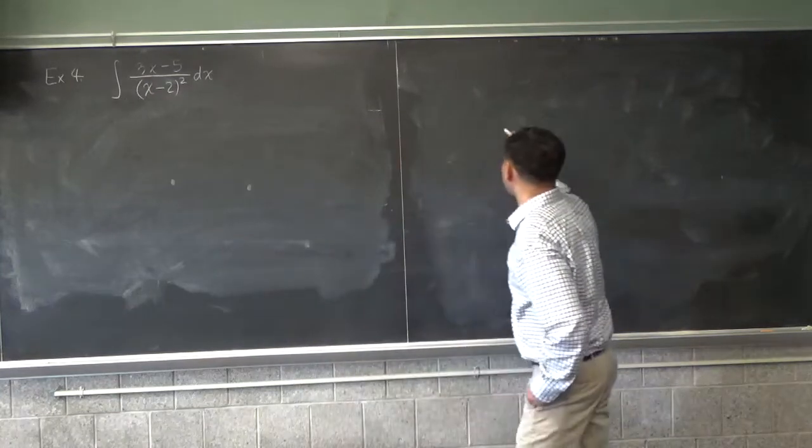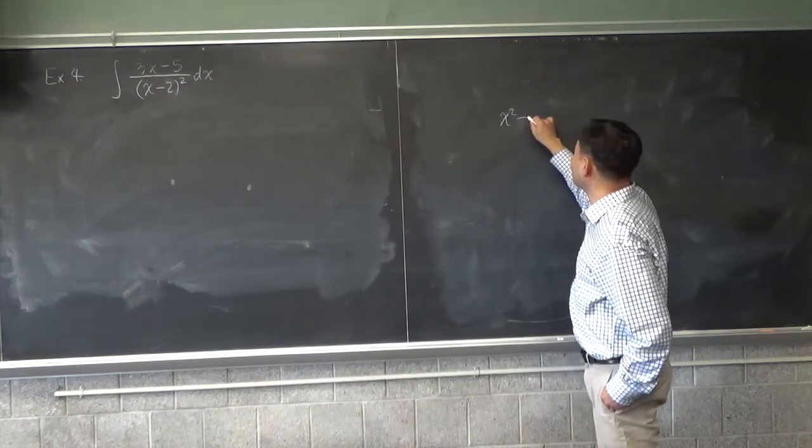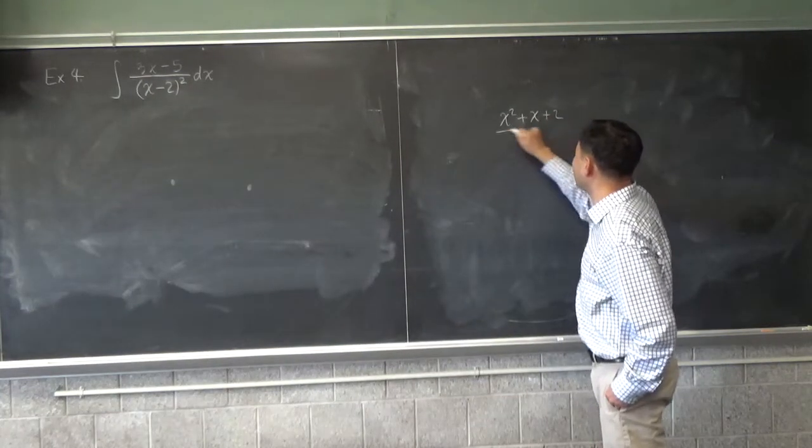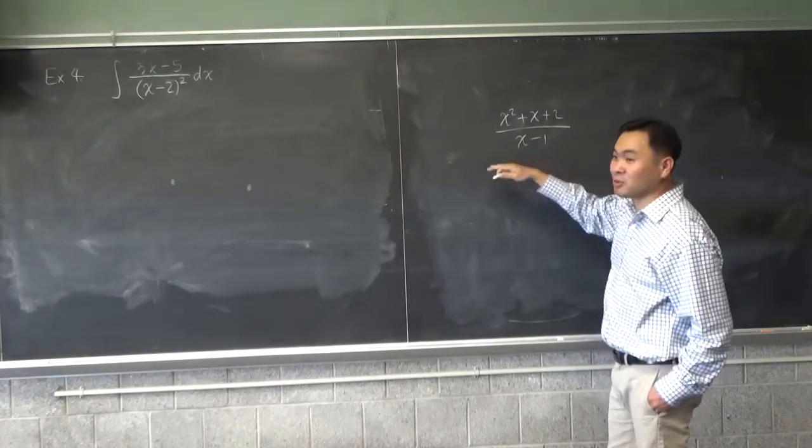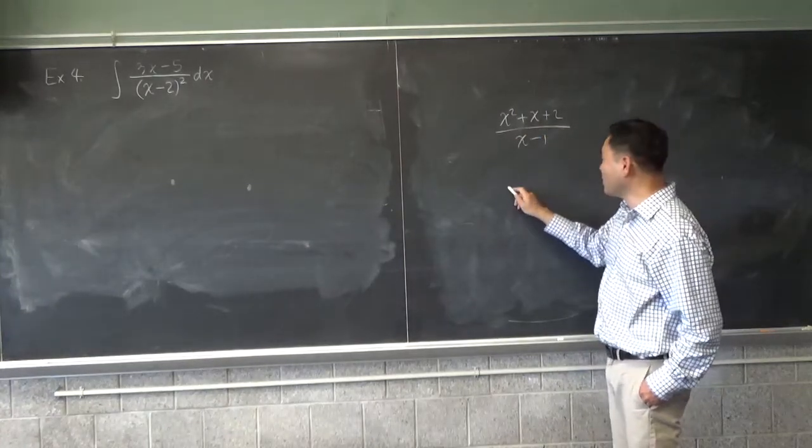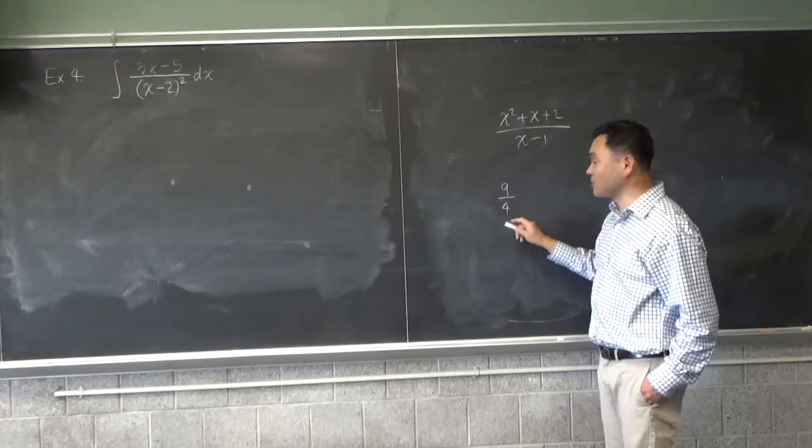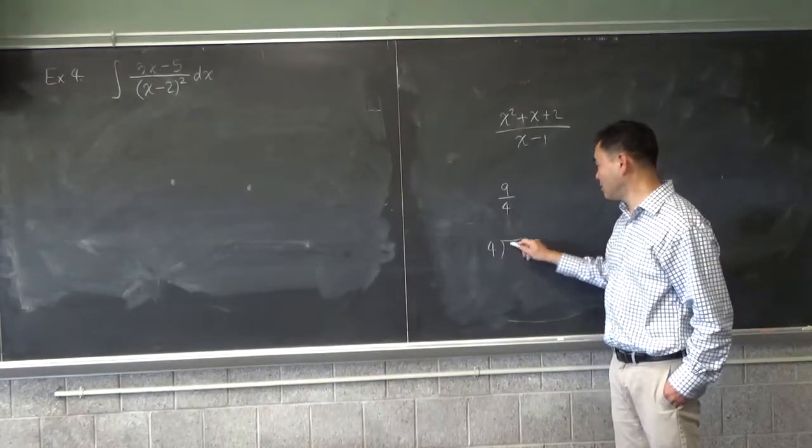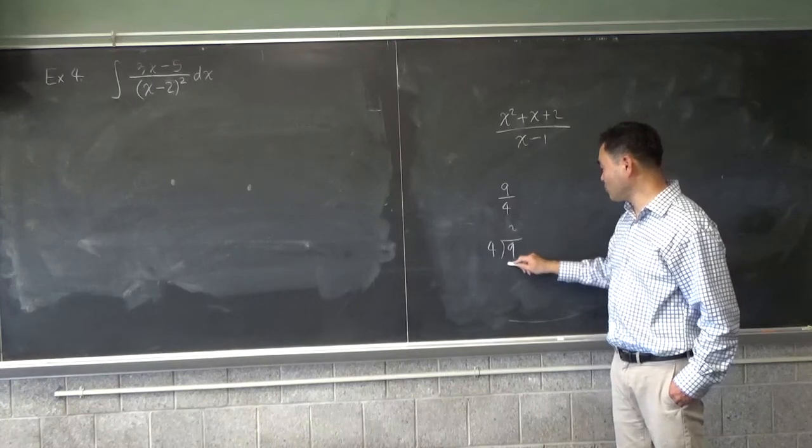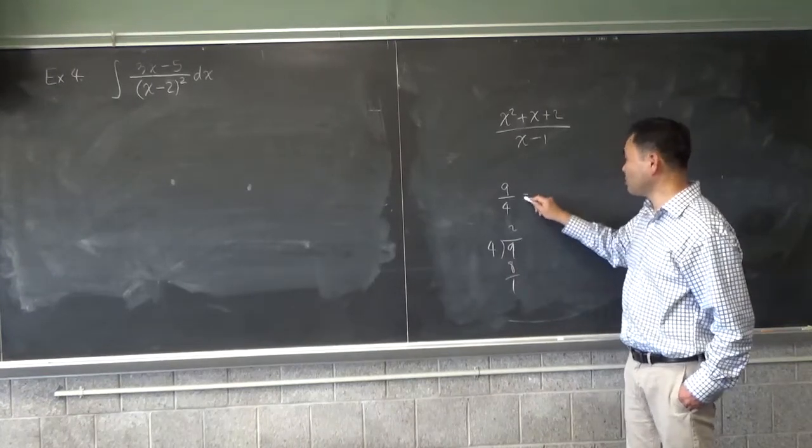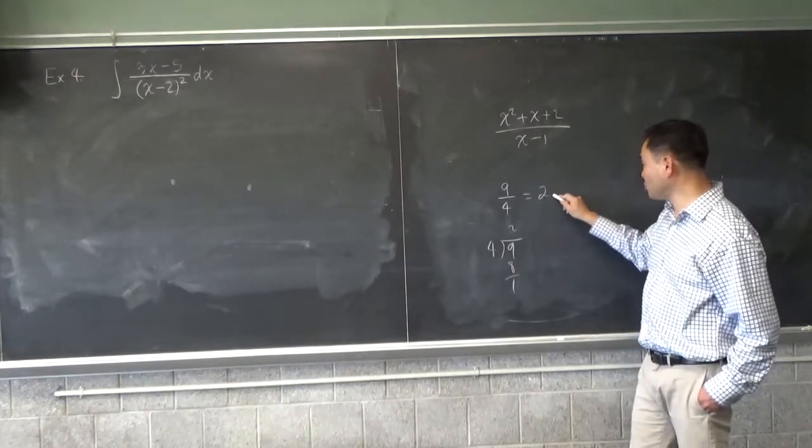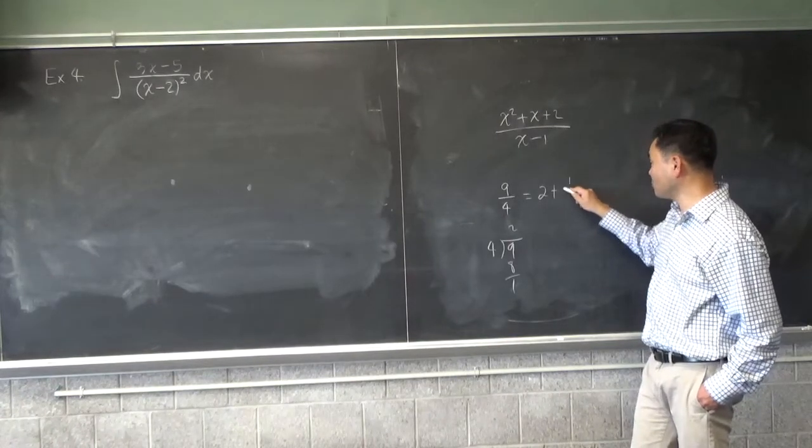So for example, if you have something like x squared plus x plus 2 over x minus 1, then you can do the long division. Just like when you have an improper fraction like 9/4 and you do the division, and you get 2 and 1/4, then you change this into mixed fractions, 2 plus 1 fourth, right?